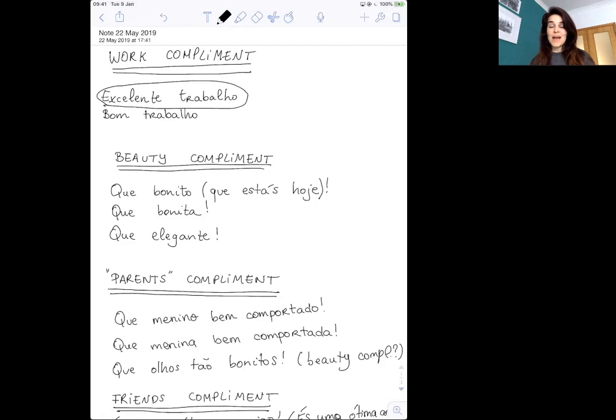Excelente trabalho, or faster, excelente trabalho. Don't forget that we have this 'ex' here—this is going to be read like 'sh' in Portuguese when it's not accentuated, which normally it isn't. So we say excelente trabalho. This means literally excellent job, excellent work, you know, well done.